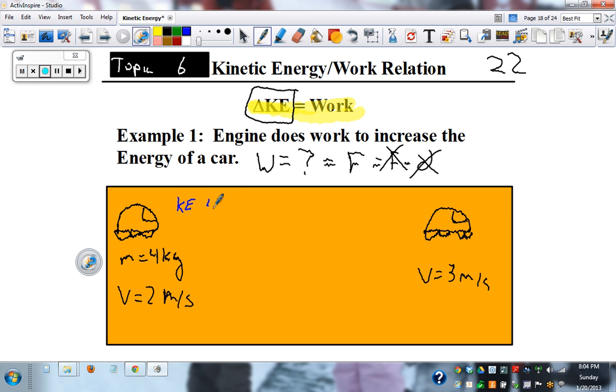Kinetic energy here equals 4 times 2 squared over 2 equals 4 times 4 over 2 equals 8 over 2 equals 4 joules. So that's our starting kinetic energy.